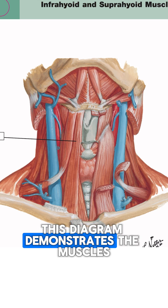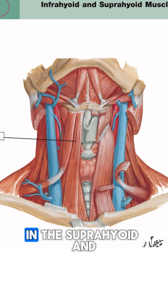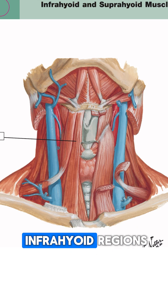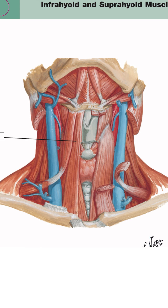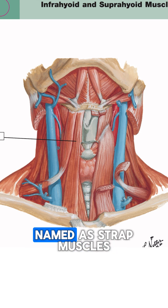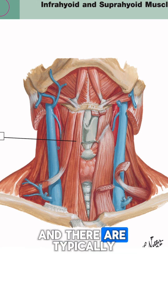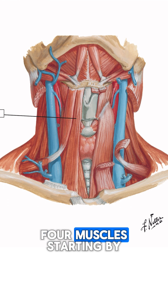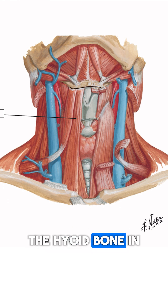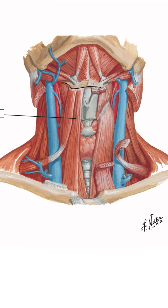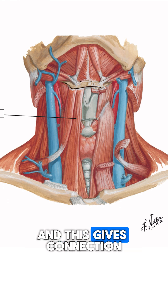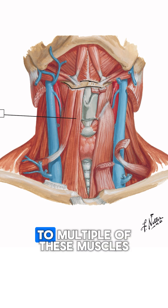This diagram demonstrates the muscles in the suprahyoid and infrahyoid regions. The infrahyoid muscles are named the strap muscles, and there are typically four muscles. Starting by the hyoid bone in the middle, this gives connection to multiple of these muscles.